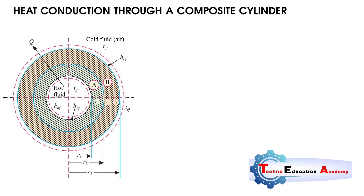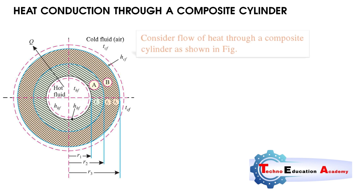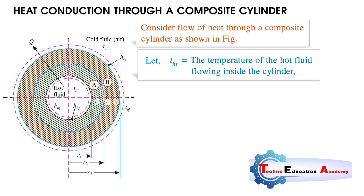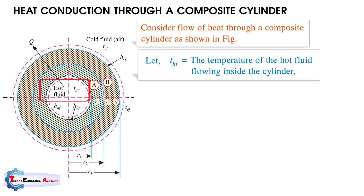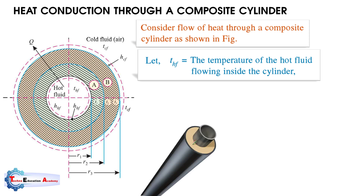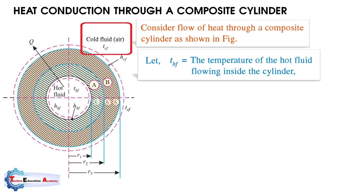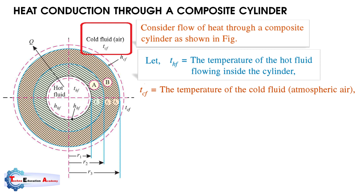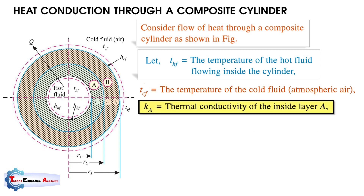This is the schematic diagram. Here, let T_hf be the temperature of the hot fluid flowing inside the cylinder. For example, in a steam pipe problem, the steam is the hot fluid and the surrounding atmospheric air is the cold fluid. So T_hf is the temperature of the hot fluid inside, and T_cf is the temperature of the cold fluid (atmospheric air). K_a is the thermal conductivity of the inside layer.